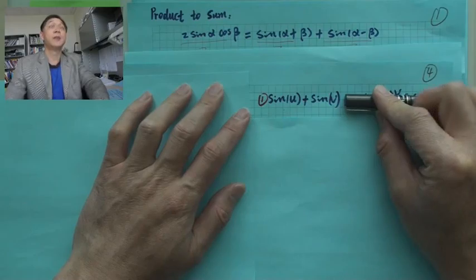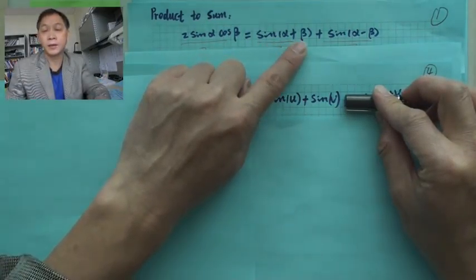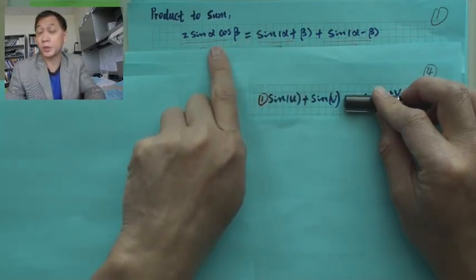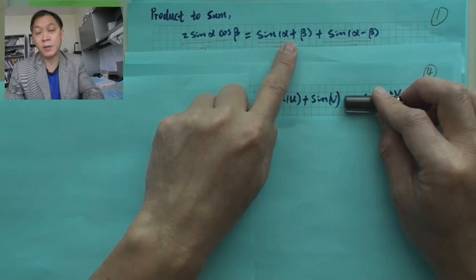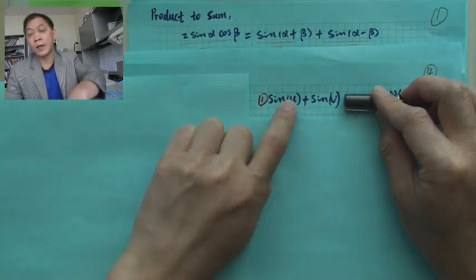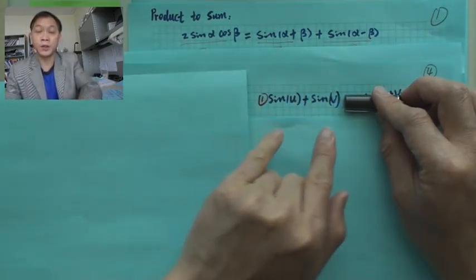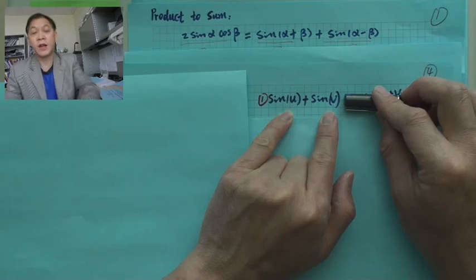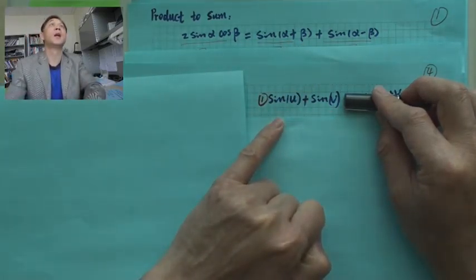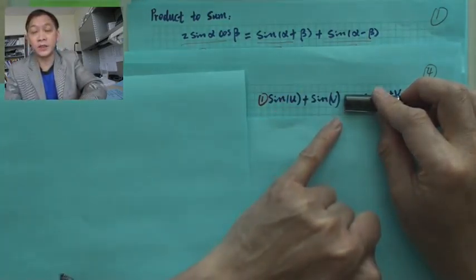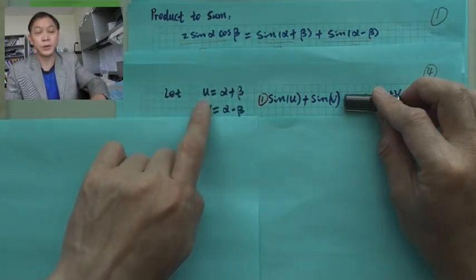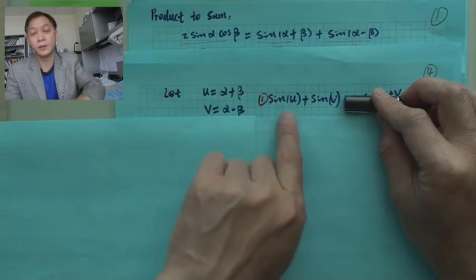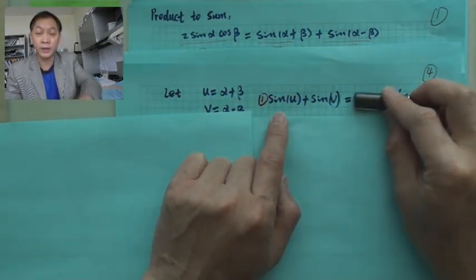If you have alpha plus beta and sine alpha minus beta — going from right to left means going from sum to product. I like to call alpha plus beta as u and alpha minus beta as v. This will work for any two different angles. So alpha plus beta is u and alpha minus beta is v — and on the right-hand side, that's actually now on the left.